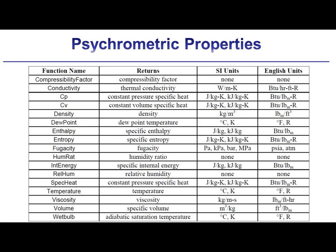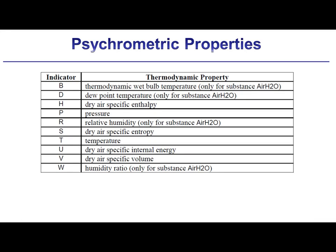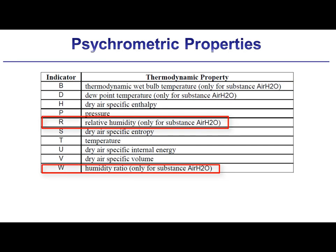Three properties must be included in order to fix the state when using any of the property functions with the substance air_H2O, rather than just the two properties required to fix the state of a pure fluid. One of these three properties has to be pressure. Note that there is no pressure function for air_H2O as there is for real fluids and ideal gases. The one-letter indicators recognized in psychrometric functions are listed in a table. Some indicators are also applicable for real fluids and ideal gases, but a few are only applicable to air_H2O: B and D for wet bulb and dew point temperature respectively, R for relative humidity, and W for humidity ratio.